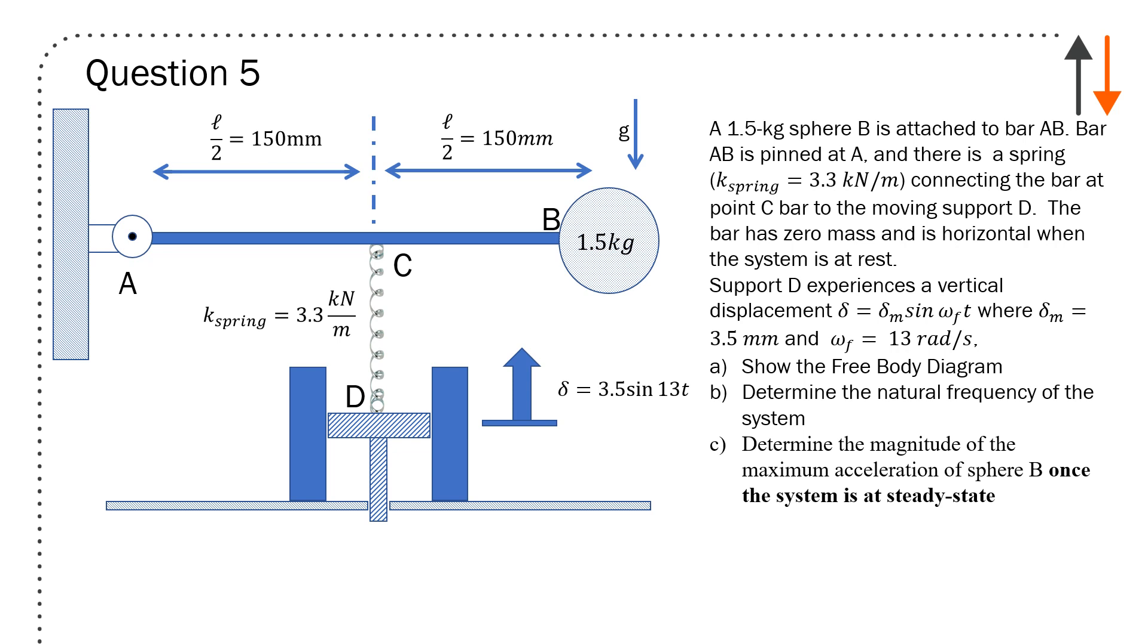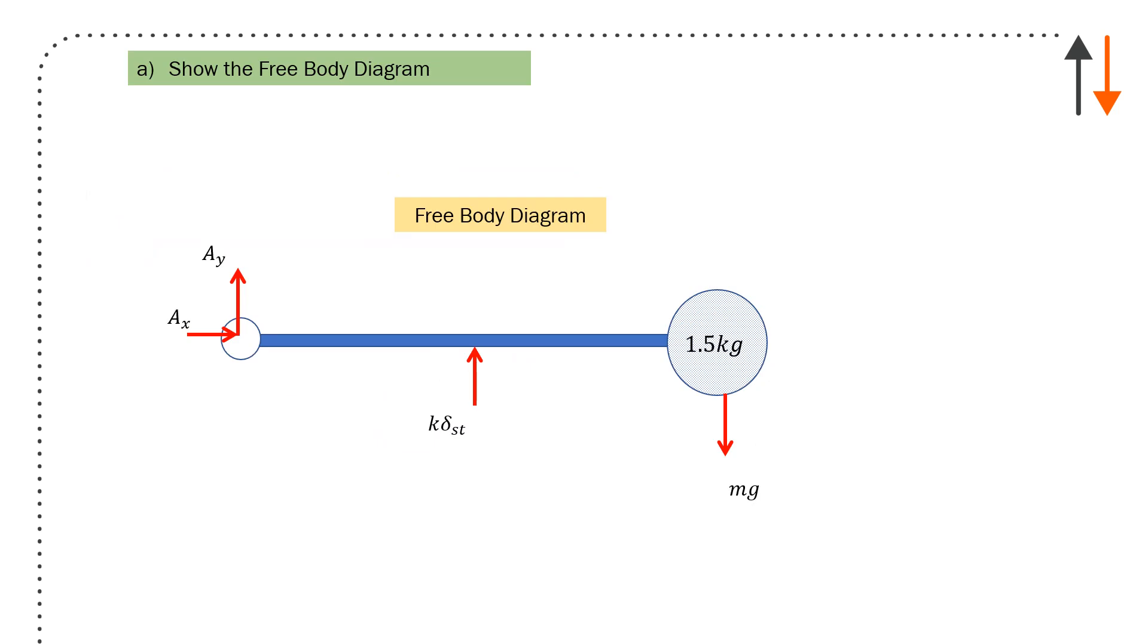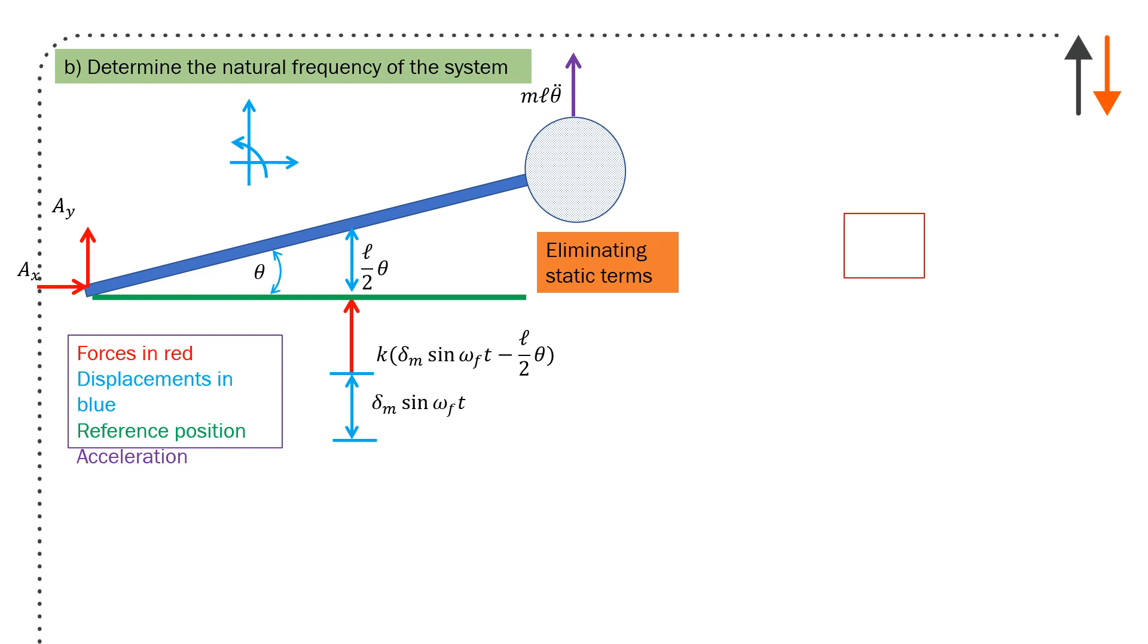You're asked to find the natural frequency of the system and the magnitude of the maximum acceleration once the system is at steady state when the natural frequency has died down. Show the free body diagram. Free body diagram is straightforward: I've got a spring force, weight from the sphere, no weight from the rod because it's massless, and a reaction force at the pins A_x and A_y. Friction force, displacements in blue, and the reference position is the vertical position. I have eliminated all the static terms. Moments about A: because it's a rotational problem, it is not going to be a force balance—it has to be a moment balance. It's really important to recognize, on all of these problems, that when you have rotational motion you cannot use a force balance.